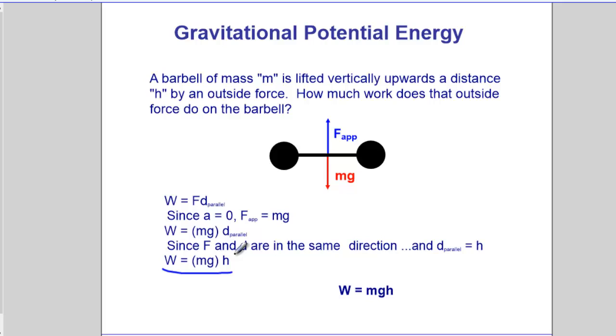This is the work done by, or against gravity, mg, and this mgh is commonly referred to as potential energy, or to be more specific, gravitational potential energy. Sometimes you'll see us draw GPE, it means gravitational potential energy.